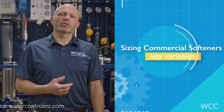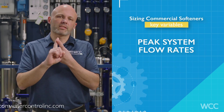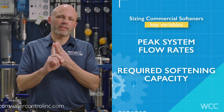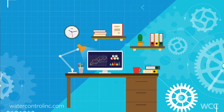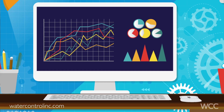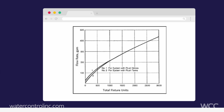Sizing a commercial softener starts with examining two key variables: peak system flow rates and required softening capacity. Calculating the peak flow rate in gallons per minute of a building involves calculating total softened water fixture counts for the facility and using a special chart called Hunter's Curve to identify a corresponding peak or worst-case flow requirement.